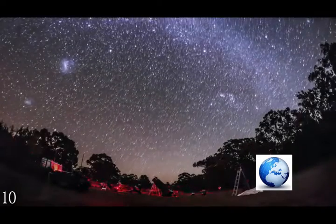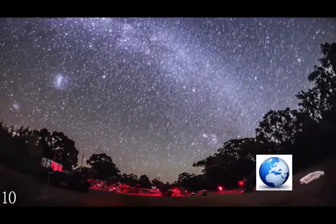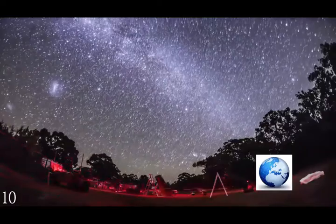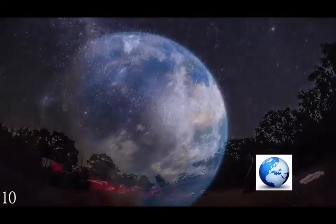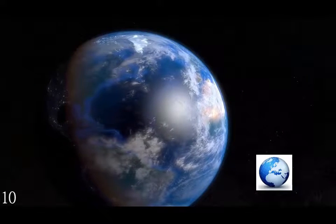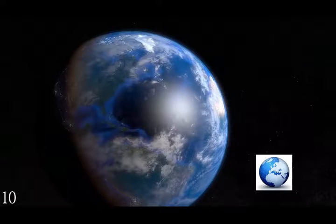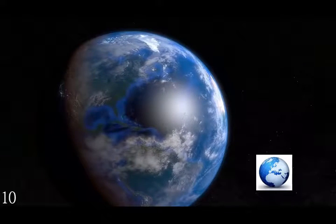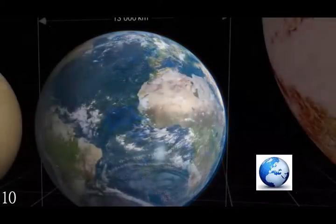Before we can truly grasp the gravity of the threats as well as the beauty that surrounds our planet, we must first realize just how small our planet is. The circumference of Earth at the equator is about 24,874 miles, and from the North Pole to the South Pole it is about 24,860 miles. Within our solar system, we are the fourth largest planet.